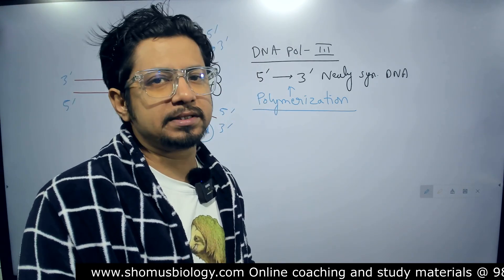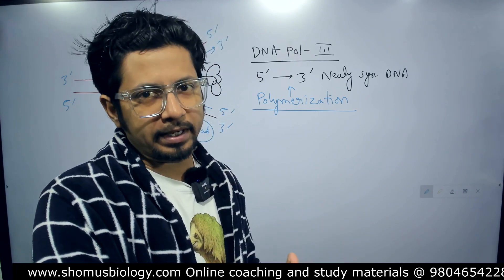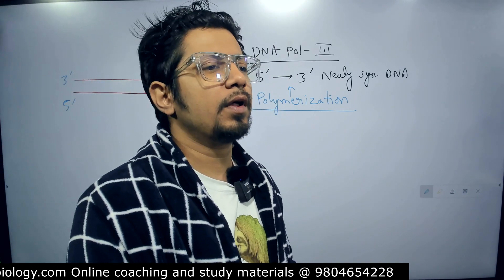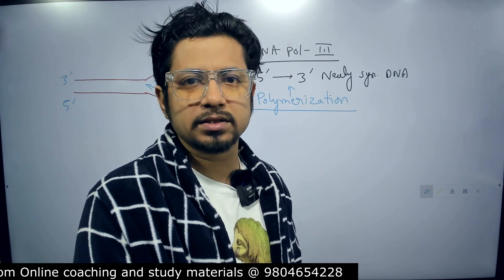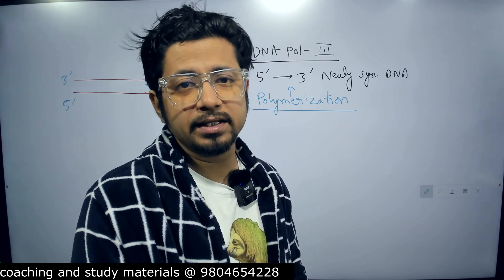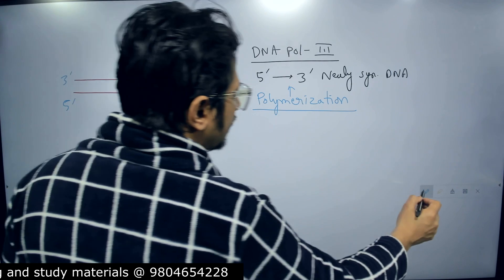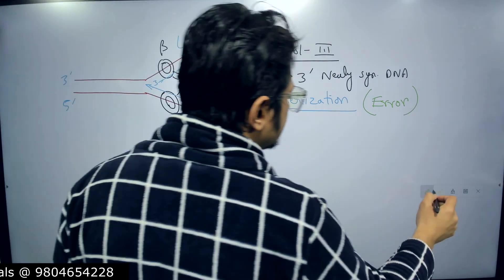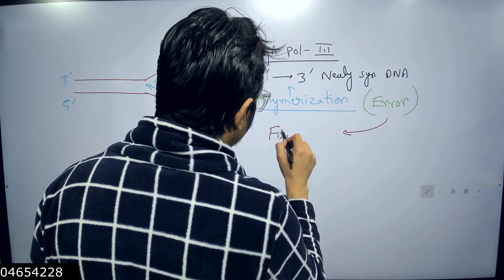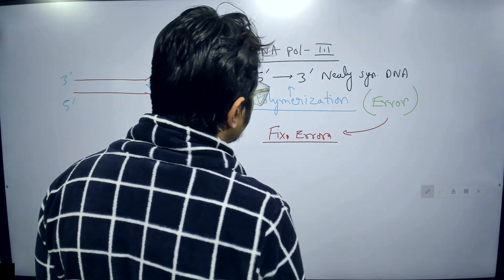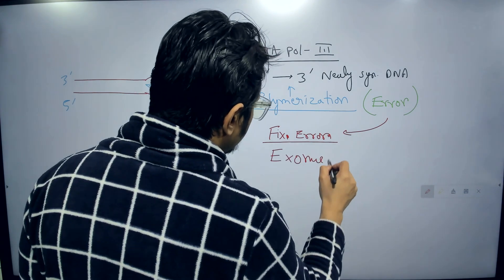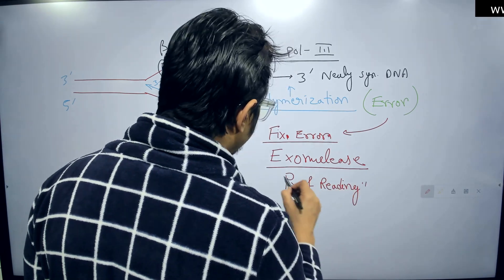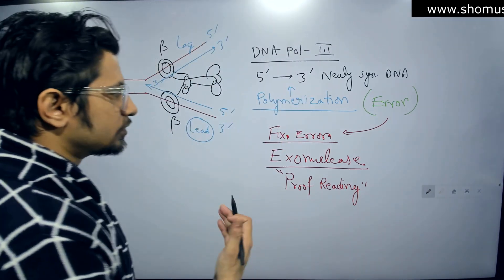One very important concept is that DNA Polymerase 3 is involved in polymerization in the 5 prime to 3 prime direction. But apart from that, DNA Polymerase 3 is also accountable for any mistakes made during replication. It might involve erroneous nucleotide addition during the polymerization event. If an error occurs, it can fix the error using exonuclease activity, also known as proofreading activity.